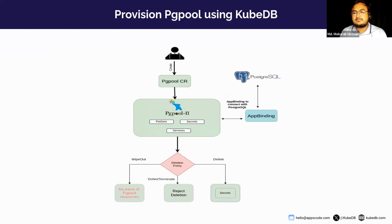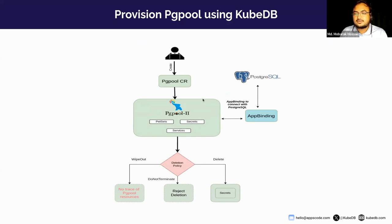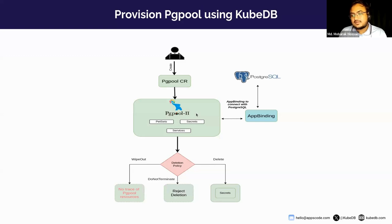Now let's discuss how KubeDB provisions PgPool in a Kubernetes cluster. Here you can see that when a user creates a PgPool resource, the KubeDB provisioner is continuously watching for this kind of event. When a creation of PgPool occurs, a StatefulSet, secrets, and some services will be automatically created for the PgPool.